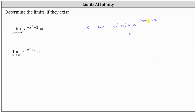Simplifying, the cube of negative 100 is going to have six zeros and be negative. We would have e raised to the power of negative, and then negative 1,000,000. The cube of negative 100 is negative 1,000,000, and then we still have plus two. Simplifying again, the opposite of negative 1,000,000 is positive 1,000,000 plus two, giving us e raised to the power of 1,000,002, which is obviously a very large number.